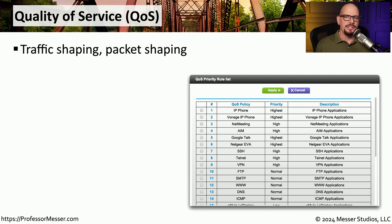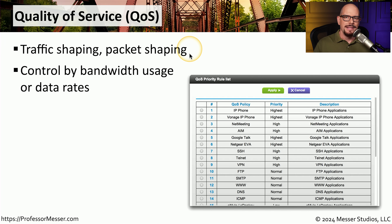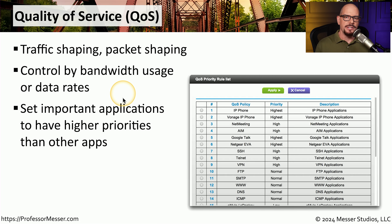Not all applications are designed to run simultaneously on a network, and certainly some applications may have a higher priority to your organization than others. For example, there might be a real-time audio or video stream that has a higher priority than a file transfer. Because of these requirements, it's very common for network administrators to provide some type of prioritization to these applications. This is often done through a quality of service or QoS configuration — you might also refer to this as traffic shaping or packet shaping. This allows the administrator to control what type of applications can flow through their network, usually based on bandwidth usage or particular data rates, allowing real-time applications to have full access while putting a lower priority on applications that are simply transferring files.